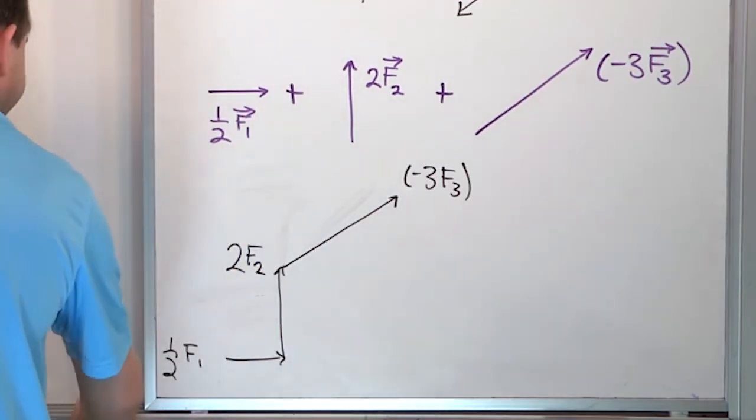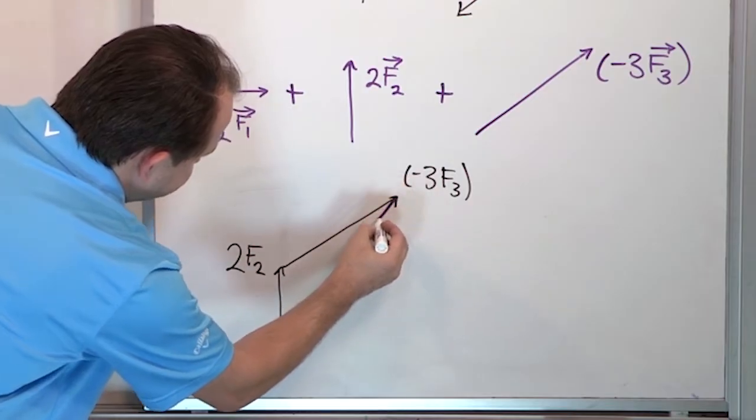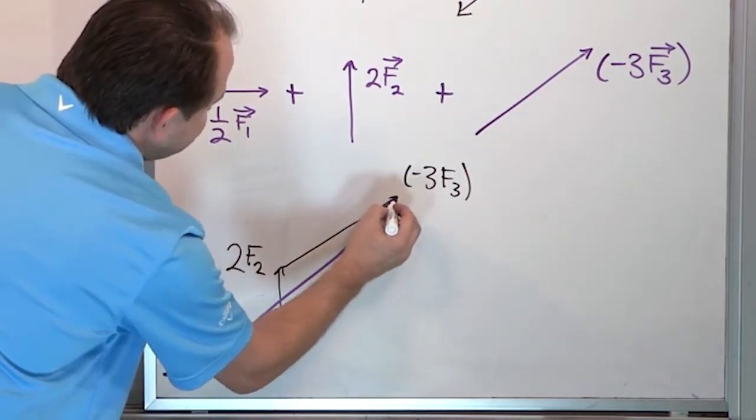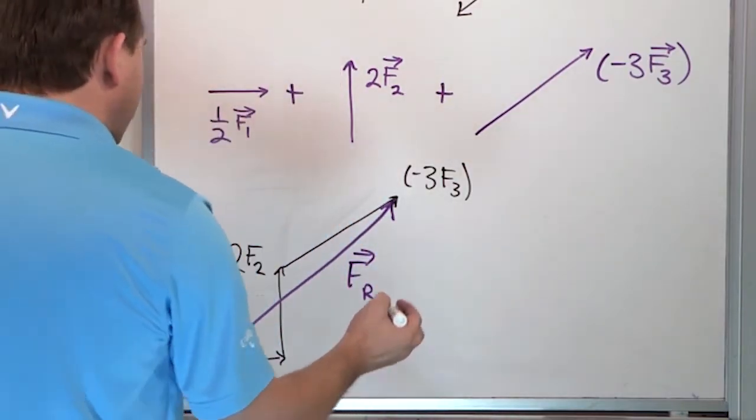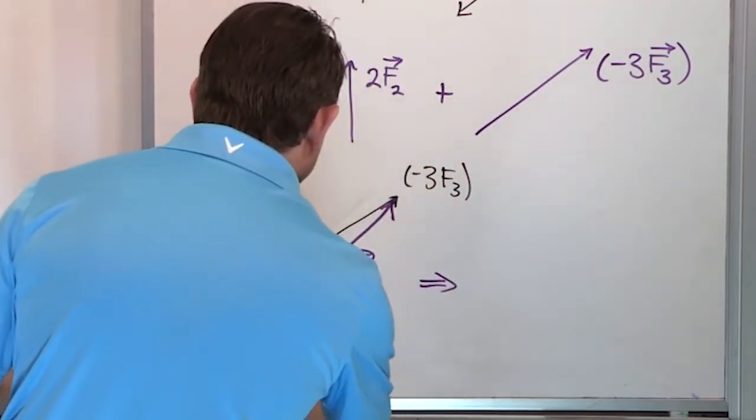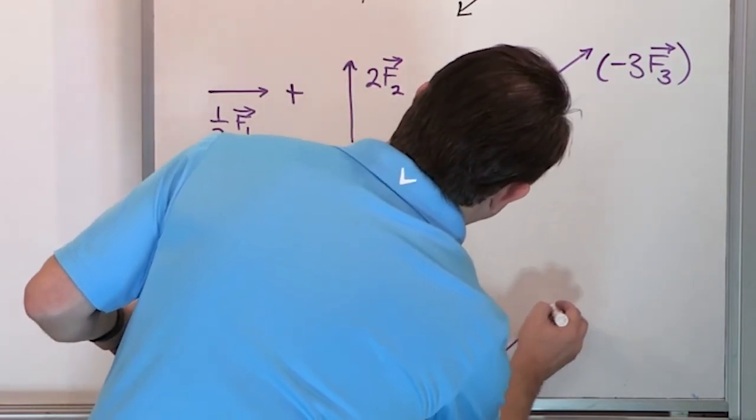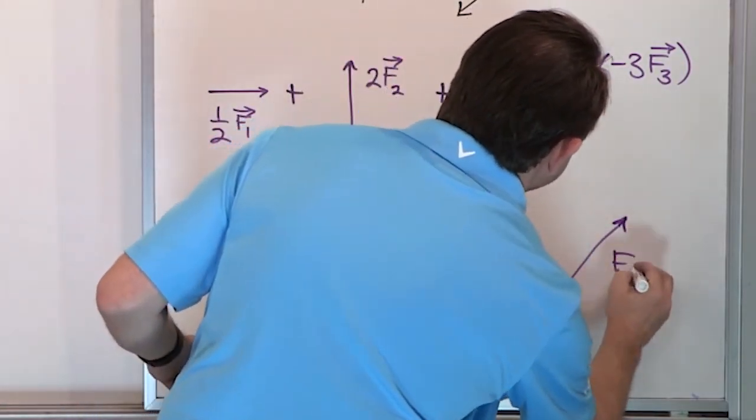And so to find the final answer, it's going to be kind of hard to do, but I'm going to take this guy and connect it straight down here. I know that's not exactly right, but you get the idea. So this is the resultant vector. So if you wanted to draw it separately, you could just say this resultant vector starts way at the bottom, and it goes at an angle more or less like this. This is the resultant vector.